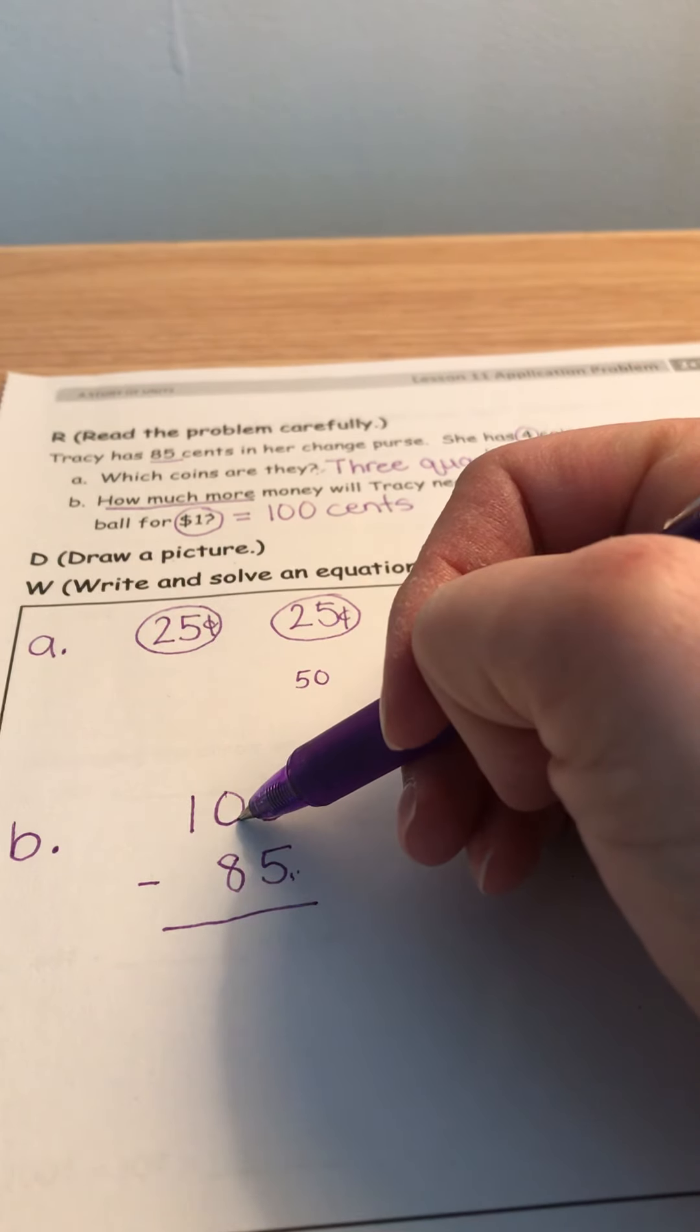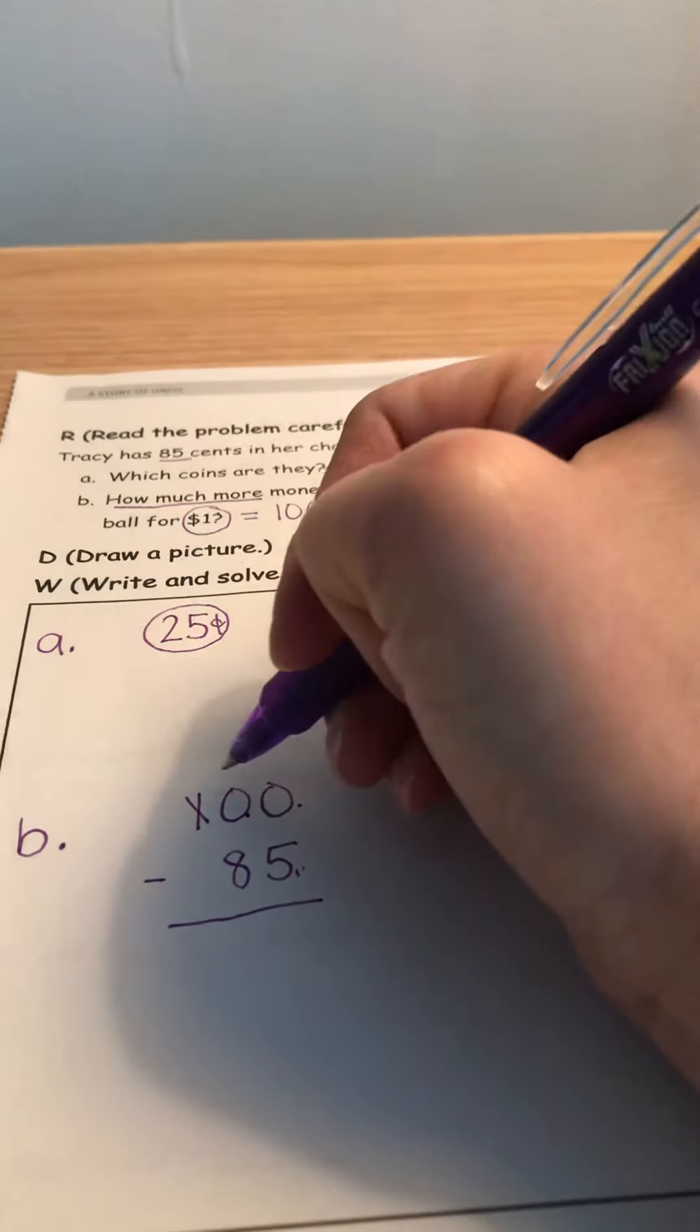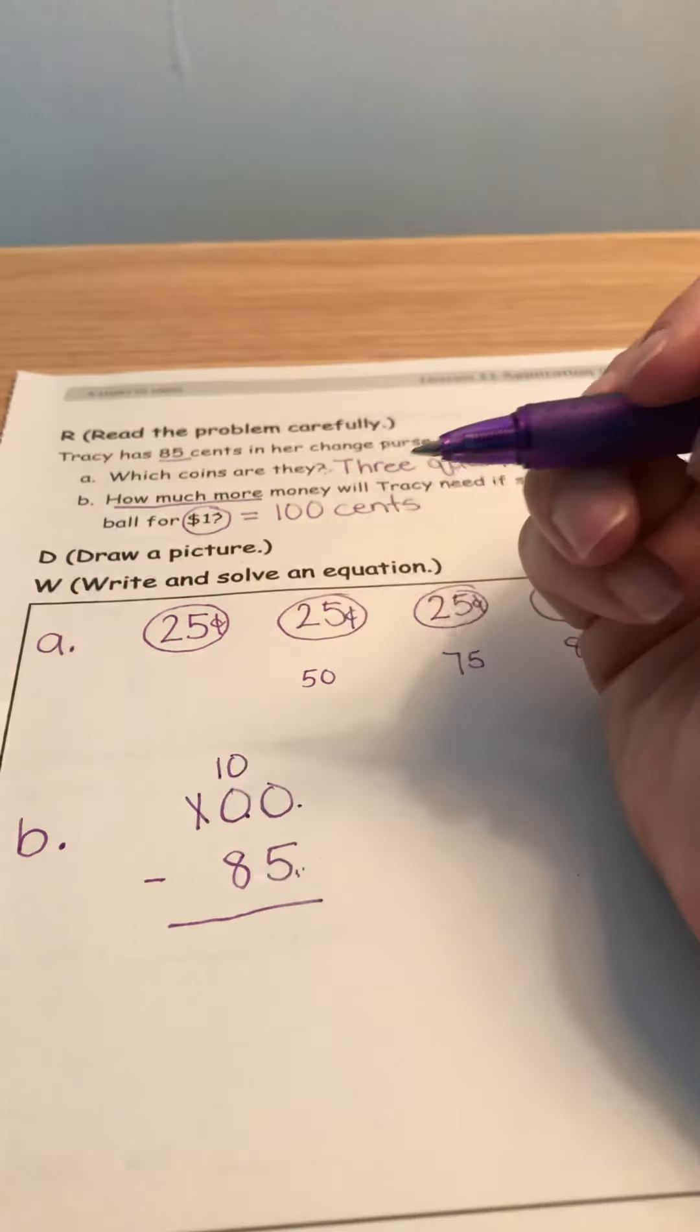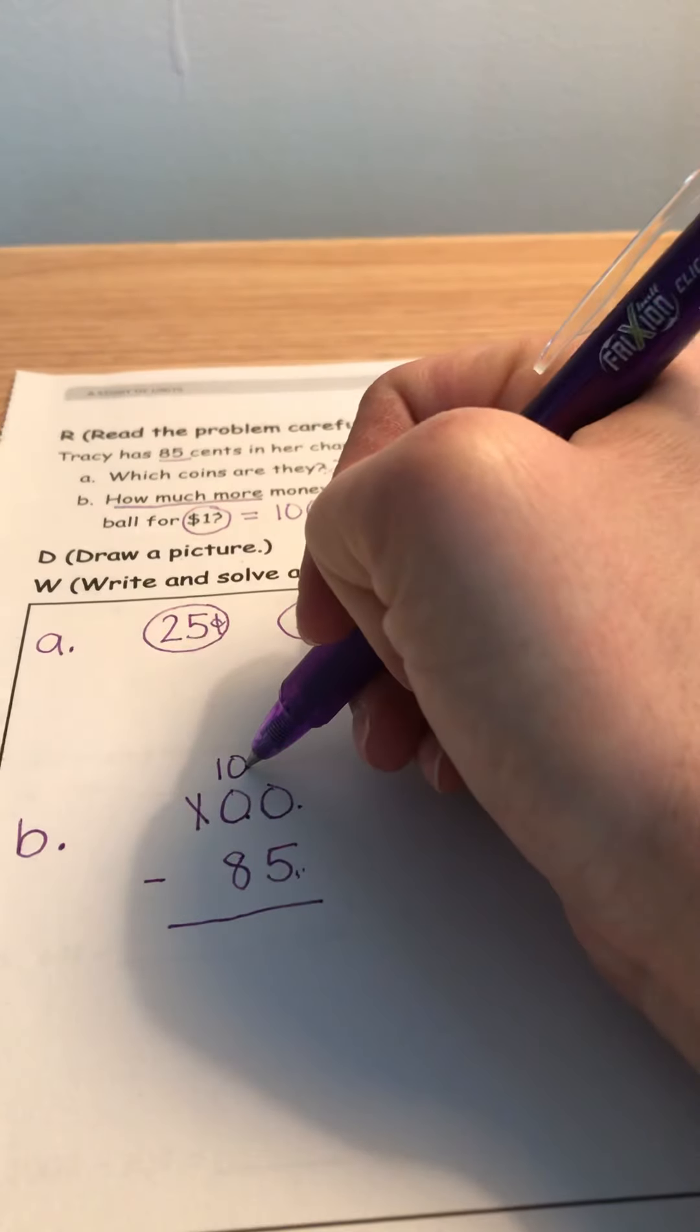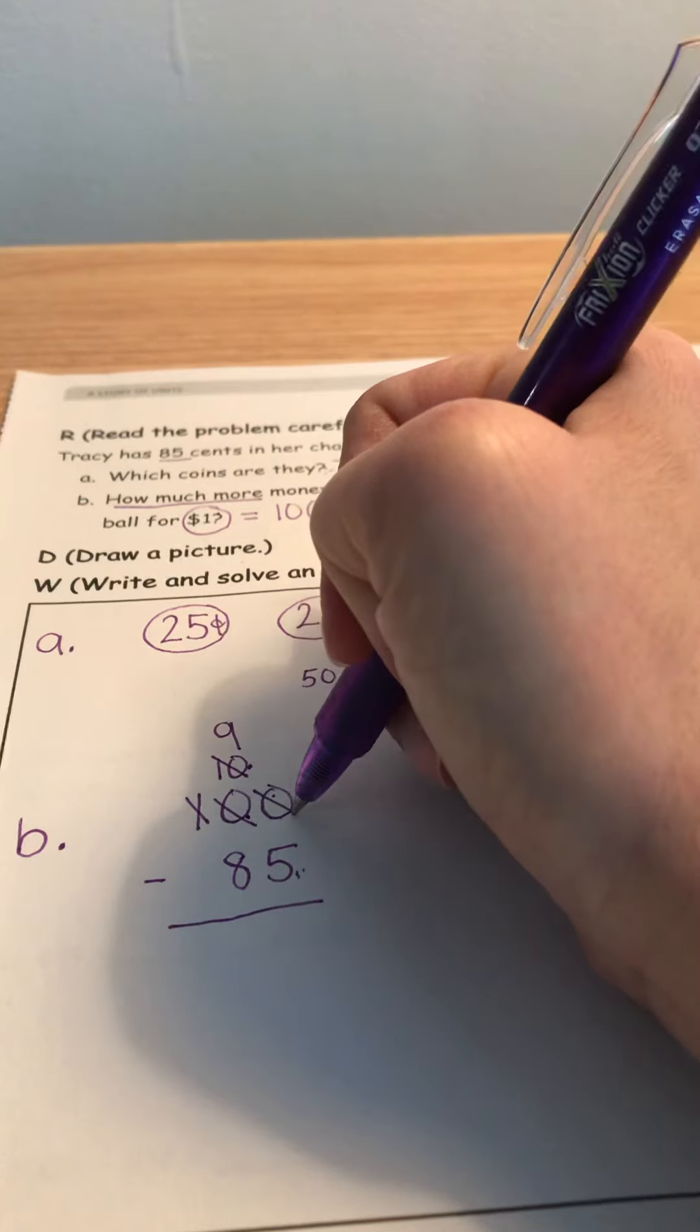Can I borrow or unbundle a 10? Nope, there's no 10s to unbundle. So I'm going to need to unbundle a 100 and bring it to the 10s. That'll give me 10 10s to work with. But now I need to unbundle one of these 10s and bring it to the ones.